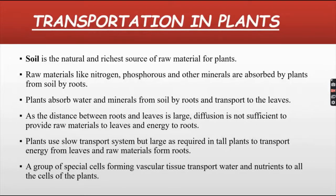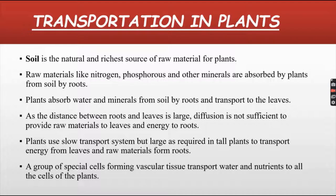Now let's see transportation in plants. Soil is a natural source of raw material for plants. Raw materials like nitrogen, phosphorus and other minerals are absorbed by plants from soil through roots. Plants absorb water and minerals from soil by roots and transport them to the leaves. As the distance between roots and leaves is large, diffusion is not sufficient to provide raw materials to leaves and energy to roots. Plants use a slow but large transport system, as required in tall plants, to transport energy from leaves and raw materials from roots.